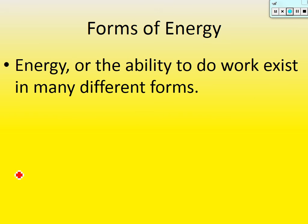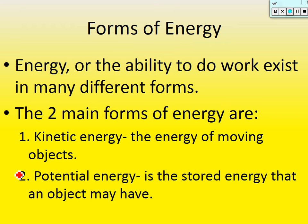Energy is the ability to do work, and it exists in many different forms. We're going to talk about a lot of them in this chapter. But the two main forms of energy we're going to talk about in this video — number one is kinetic energy. Kinetic energy, you're supposed to write it down and its definition. Kinetic energy is the energy of moving objects.